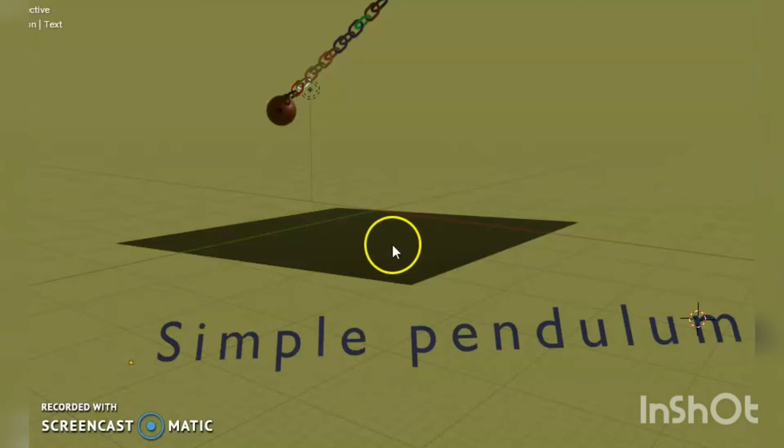You see that this is the simple pendulum. Here it is pivot. I displaced it sideways from its resting position. What is the resting position? Resting position is perpendicular. This axis is perpendicular.